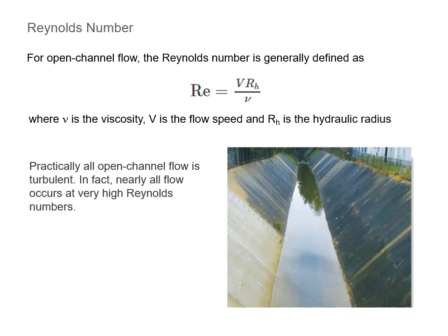For open channel flow, the Reynolds number is generally defined as velocity times hydraulic radius over the viscosity. Practically all open channel flow is turbulent. In fact, nearly all flow occurs at very high Reynolds numbers.